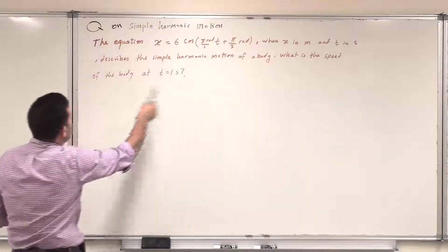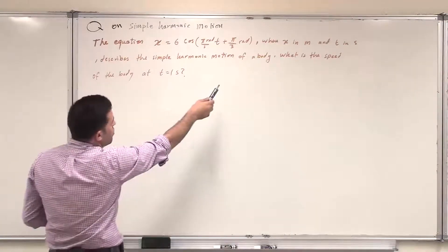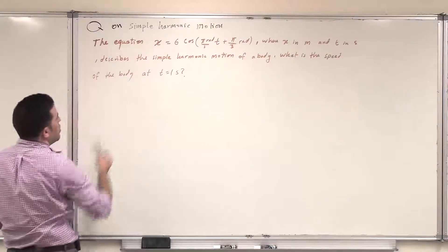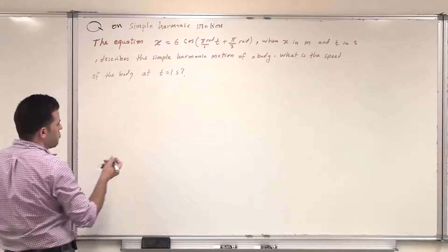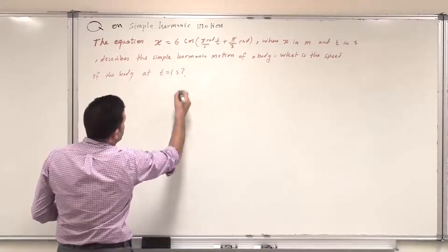where x in meters and t in seconds describes the simple harmonic motion of a body. What is the speed of the body at t equal 1 second? So we can utilize the equation of motion of this harmonic motion.